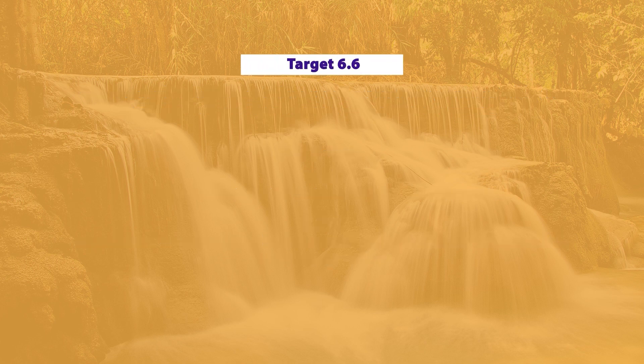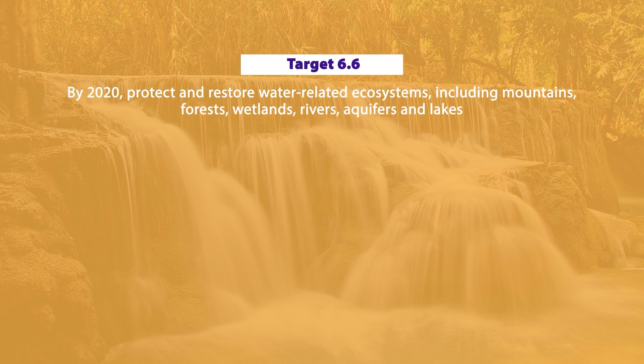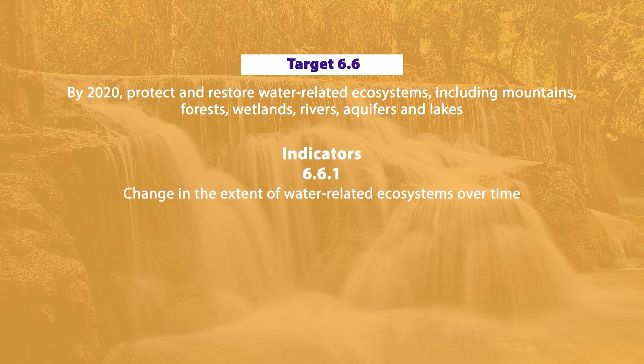Target 6.6 has been proposed to be achieved by the year 2020. It talks about the protection and restoration of water-related ecosystems, which includes forests, wetlands, rivers, aquifers, lakes, and mountains. The indicator linked to this target is the change in the extent of water-related ecosystems.